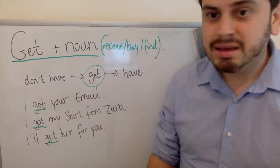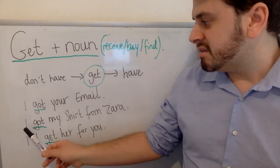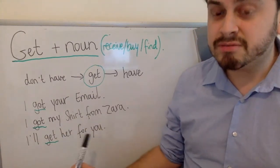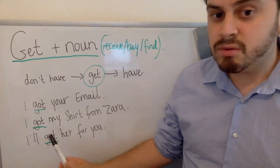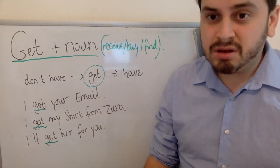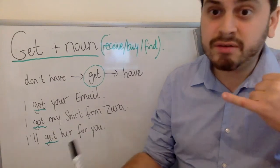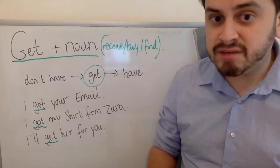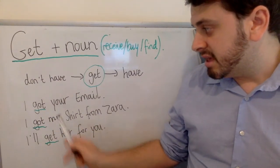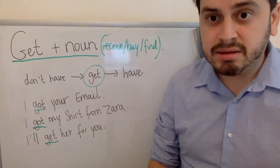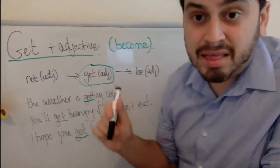Here are some example sentences. The first is: 'I got your email' — this has the same meaning as 'receive', so we could say 'I received your email.' Next: 'I got my shirt from Zara' — here 'get' means 'buy.' And: 'I'll get her for you' — meaning I'll go find her. Notice that after 'get' in each case, the object is a noun.